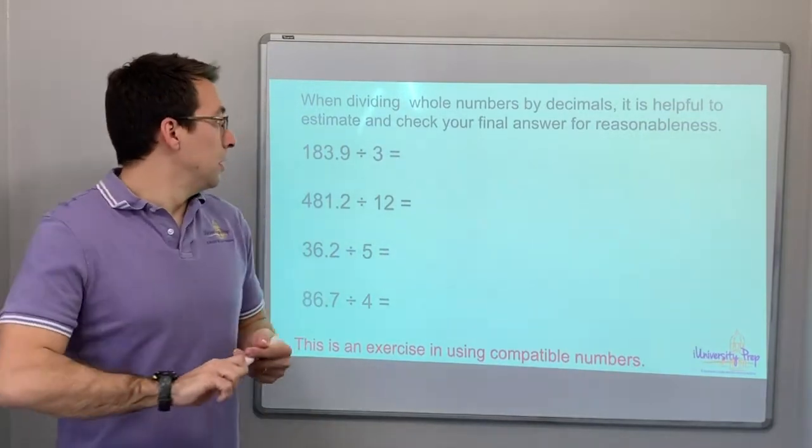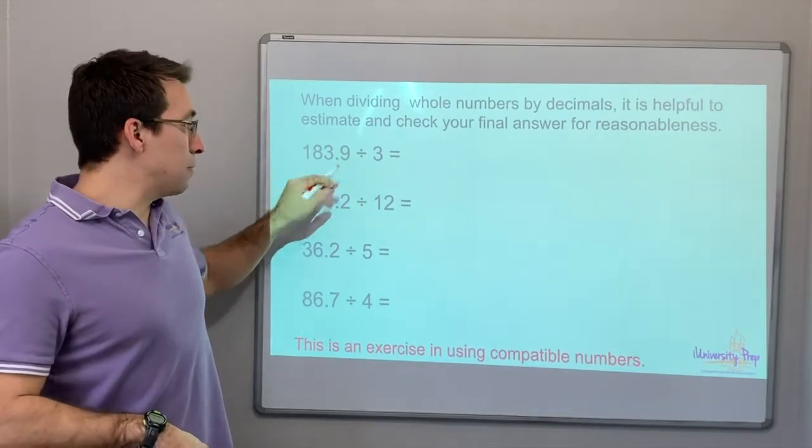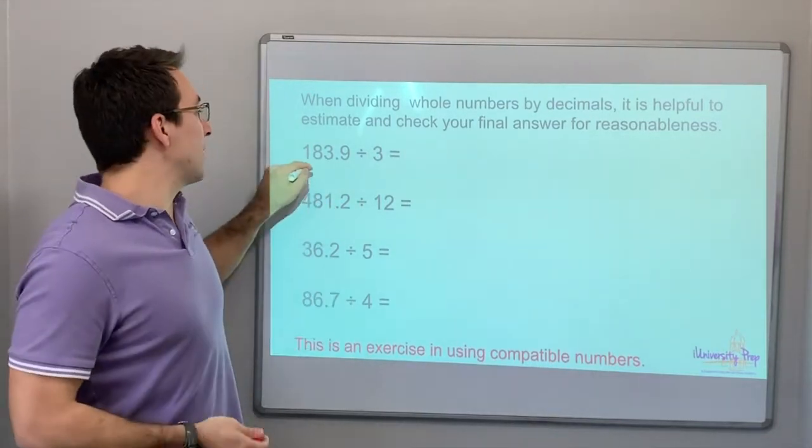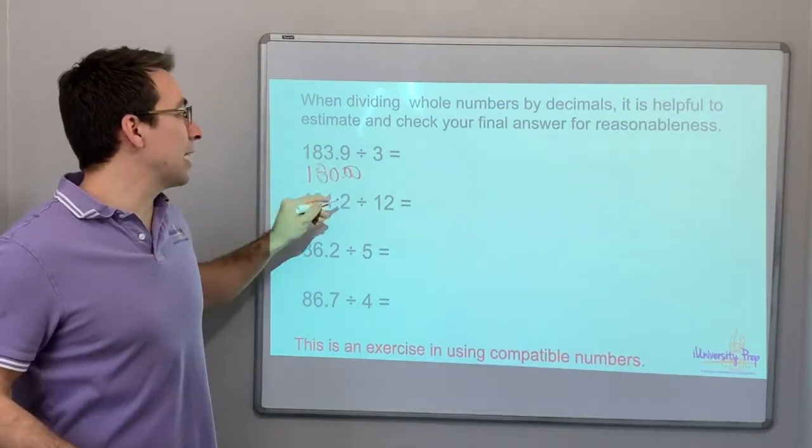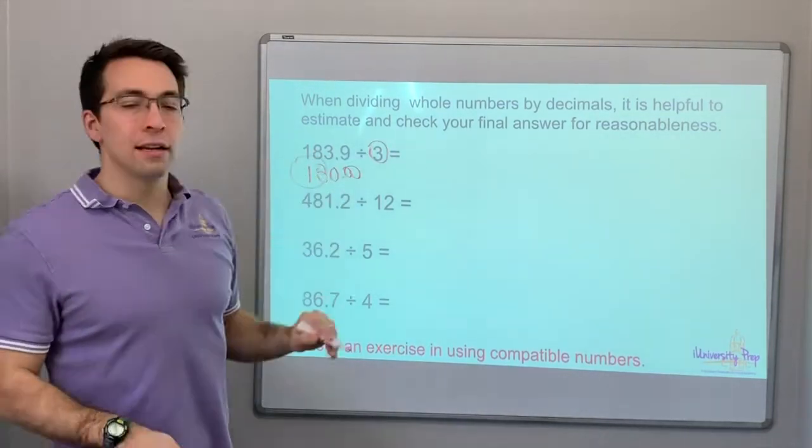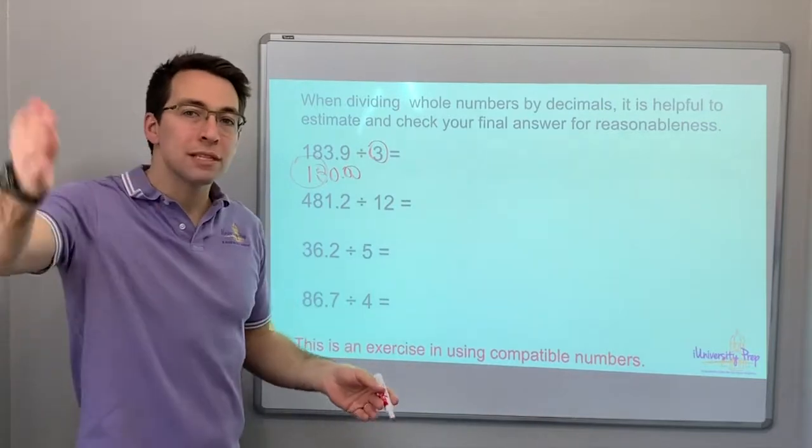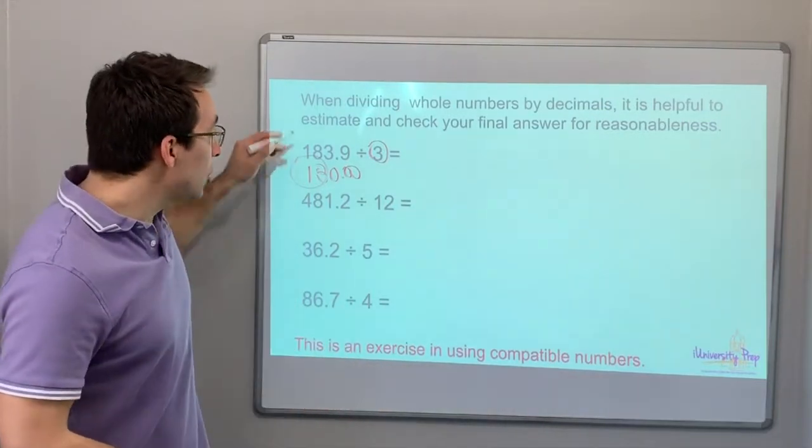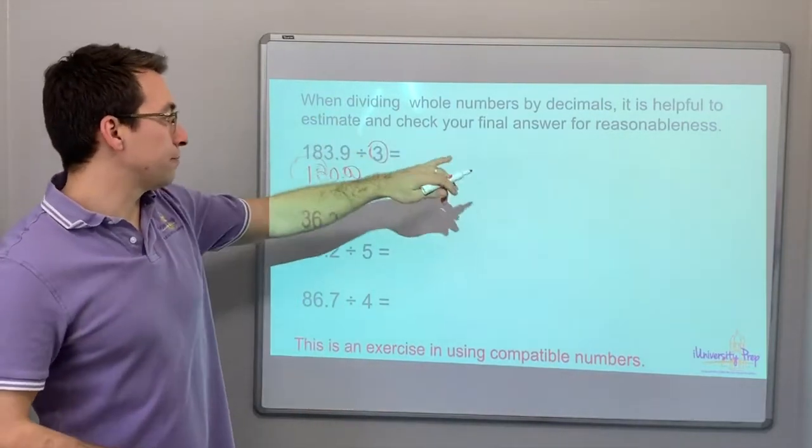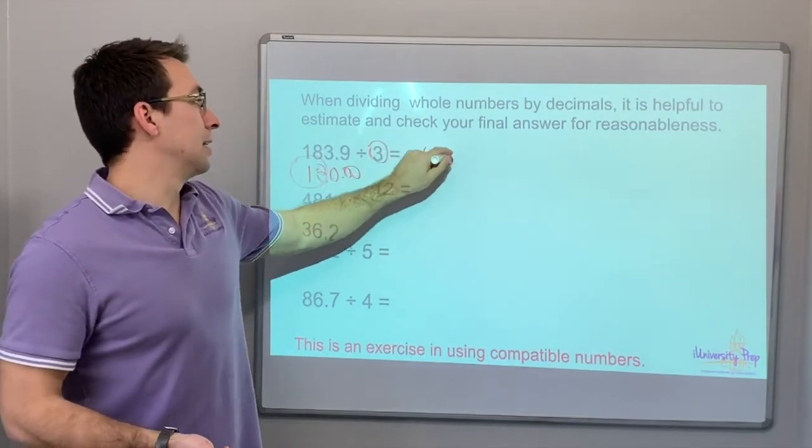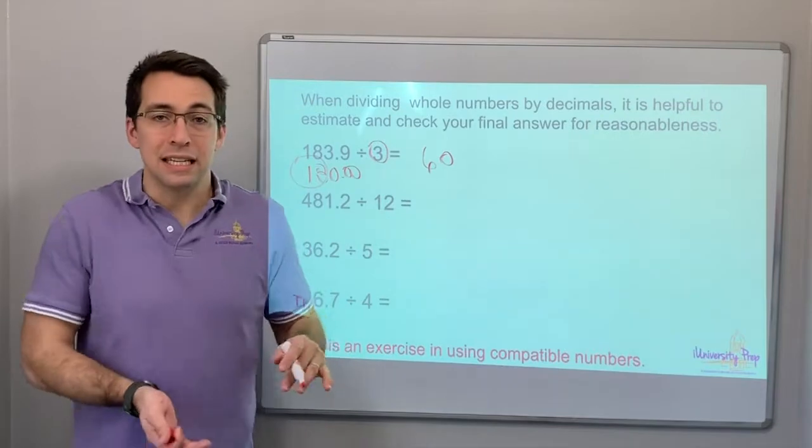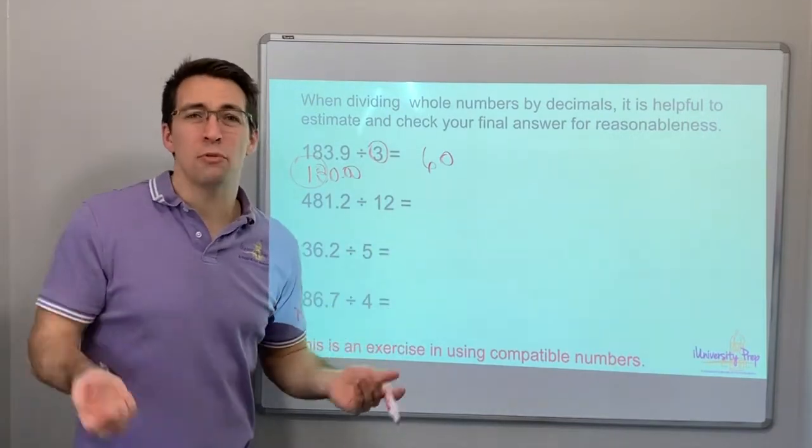So, let's look at this. 183.9. Can we round that to 180? Yeah, let's say we can. 3 and 18 are compatible. 3 times 6 is 18. So, check this out. Let's say equals 60. 3 times 60 is 180, so it's going to be right in there.